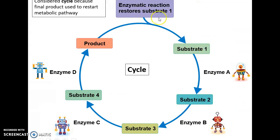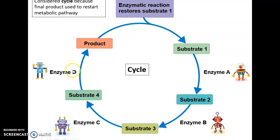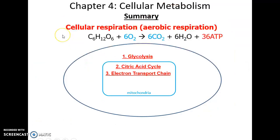In the citric acid cycle, acetyl coenzyme A comes in and binds to the product to become substrate 1, which then gets used to become substrate 2, which gets used to become substrate 3, and so on. It's a cycle because it continually reforms the product that is necessary to form the first substrate.